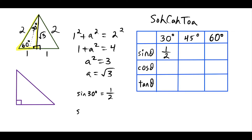Moving on to sine of 60 degrees — we look at the 60-degree angle, and sine is still opposite over hypotenuse. The side opposite 60 is root 3, and the hypotenuse is two units long. So sine of 60 degrees equals root 3 over 2.